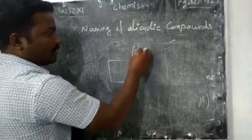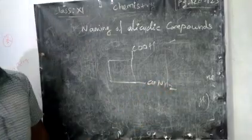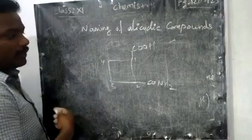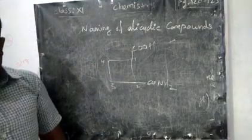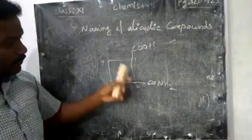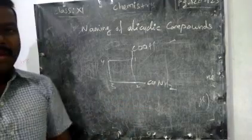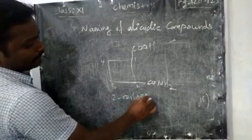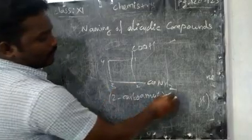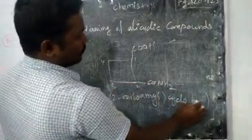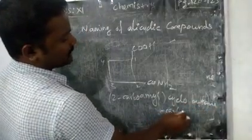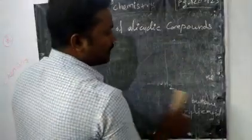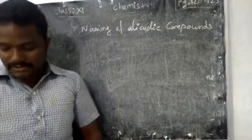If cyclohexane has a carboxylic acid group directly attached, it is named cyclohexanecarboxylic acid. For a cyclobutane ring with both an acid group (at C1) and an amide group (CONH₂, at C2): acid has highest priority. The acid is named as 'carboxy acid' and the amide at C2 as '2-carboxamide'. The name is 2-carboxamidocyclobutane-1-carboxylic acid.